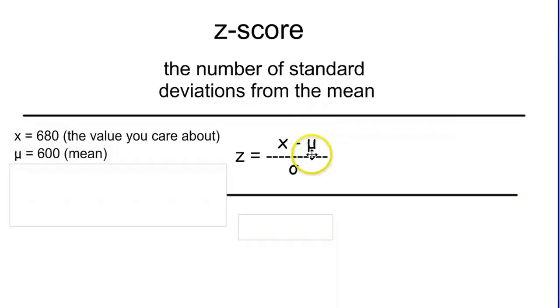Mu, the little u with the tail on it, is the mean, the average score. And then sigma, the o with the tail, is the standard deviation that goes on the bottom. In this case it was 40.